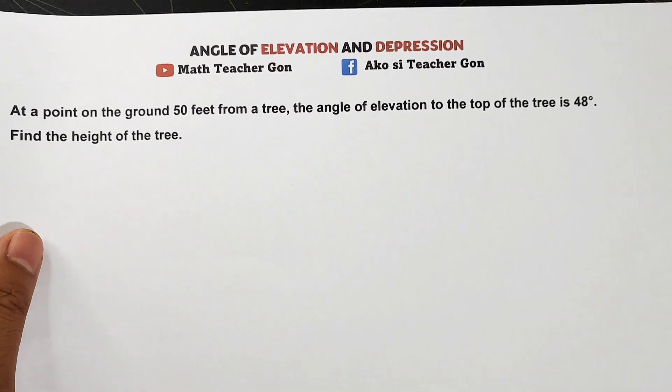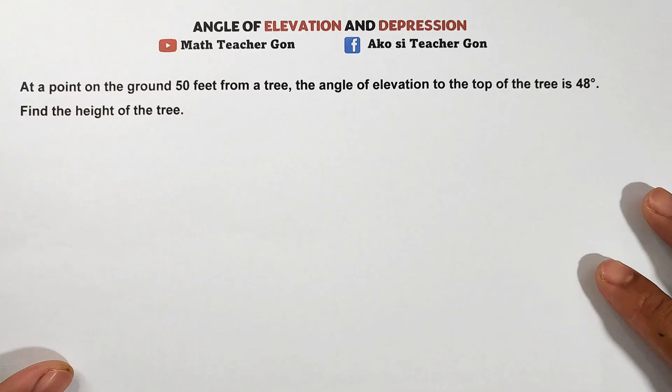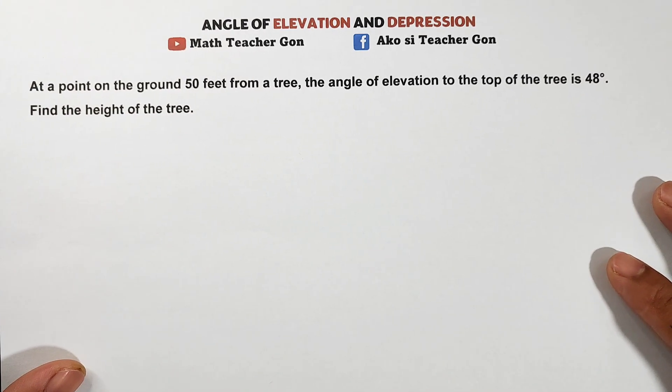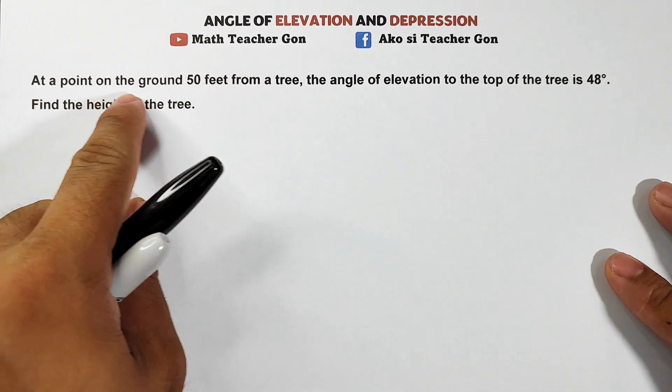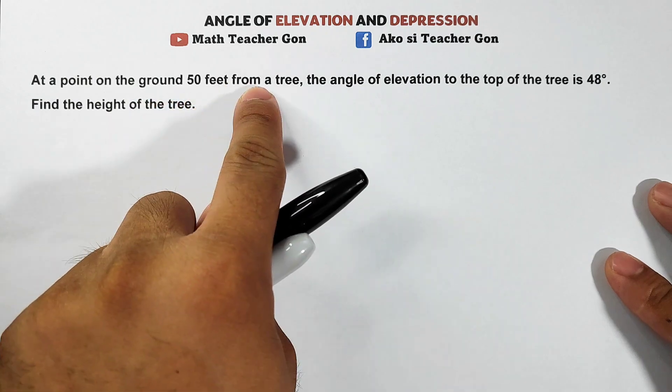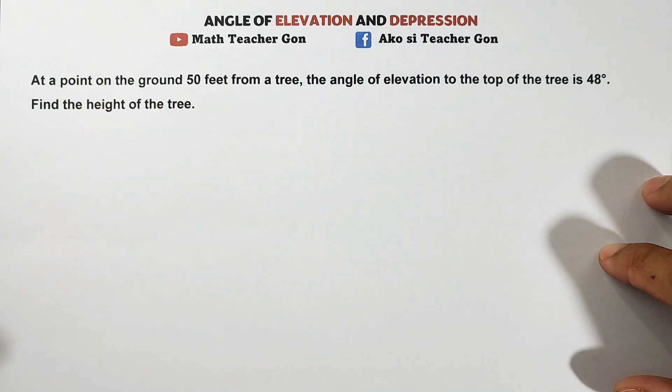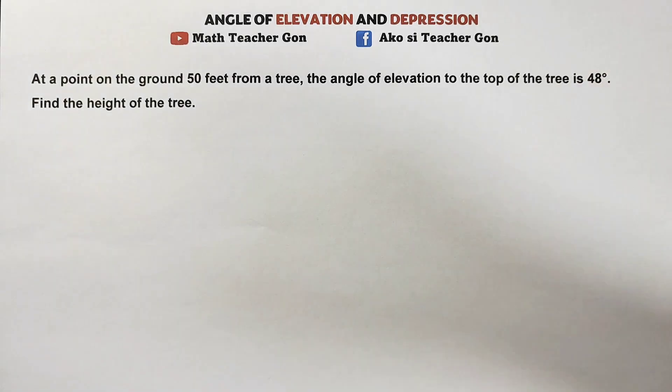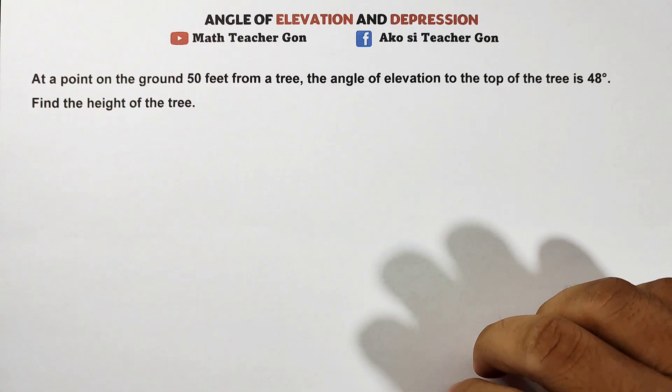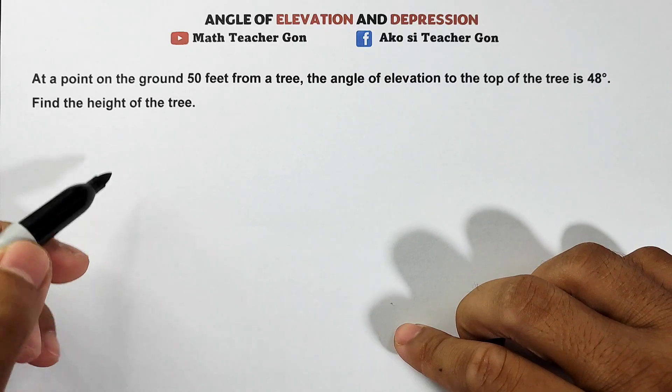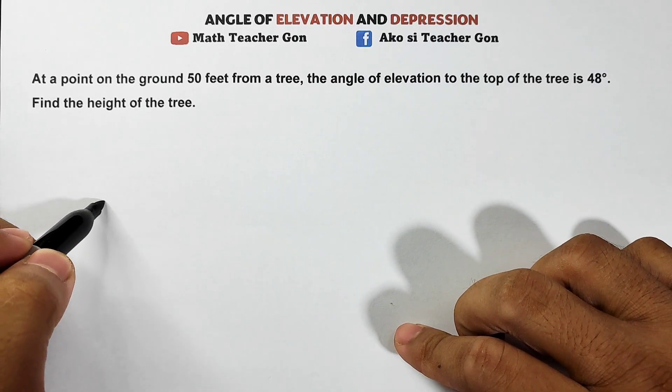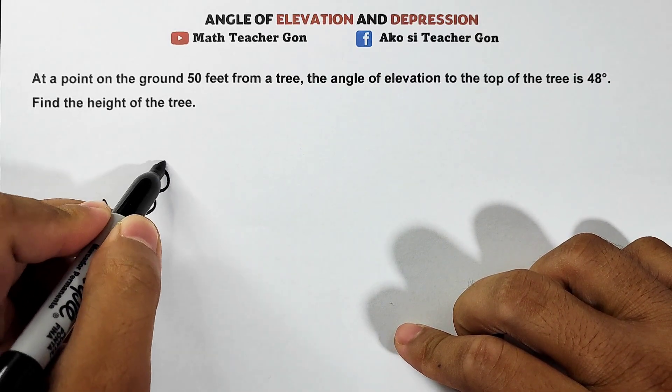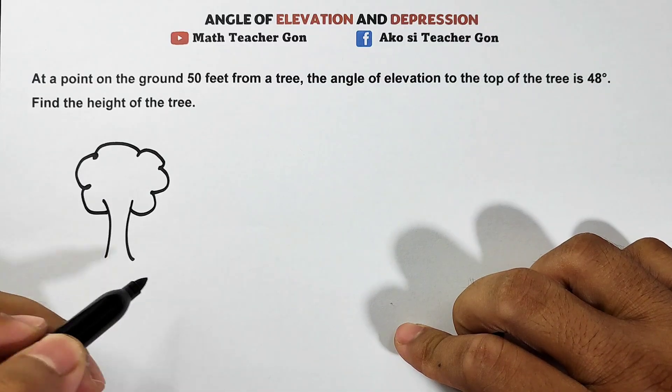Let's start with the first one. We have this problem which states that at a point on the ground 50 feet from a tree, the angle of elevation to the top of the tree is 48 degrees. Find the height of the tree. So for you to solve this well, you need to have an illustration. It doesn't need to be super beautiful. Let's draw a tree.